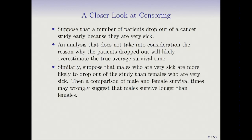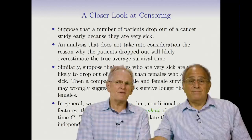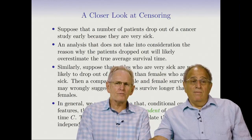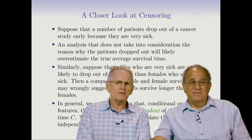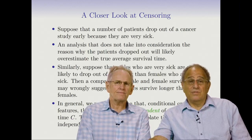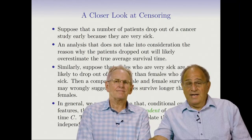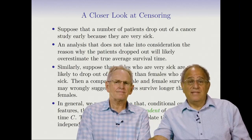To avoid bias due to censoring, we generally must assume that conditional on the observed features, the event time T is independent of the censoring time C. The examples above violate that assumption — if someone is sicker, it leads them to drop out, so the censoring and survival time are not independent. There's no purely statistical way to check this; you need to talk to investigators who ran the study to find out why observations were censored. It's more of a detective search, but one must make this assumption to proceed.